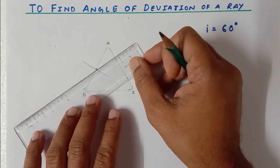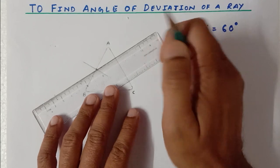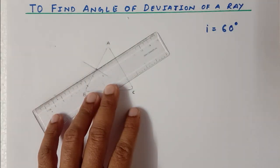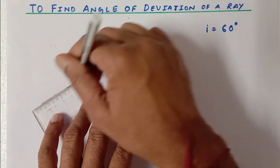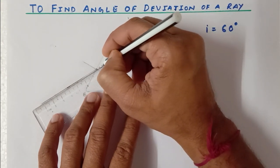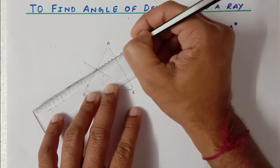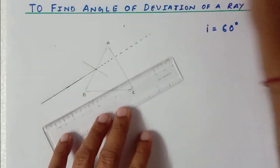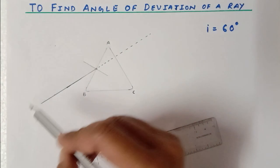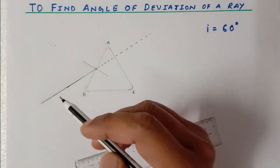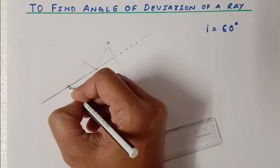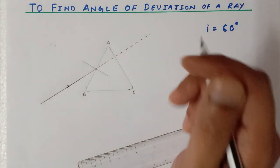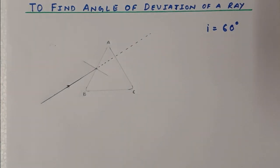I am going to join these two points and extend this line forward. In the absence of a prism, this ray would have continued to move in a straight line. But here we are using a prism, so there will be first refraction through surface AB, then second refraction through surface AC. Now let us put the prism back.